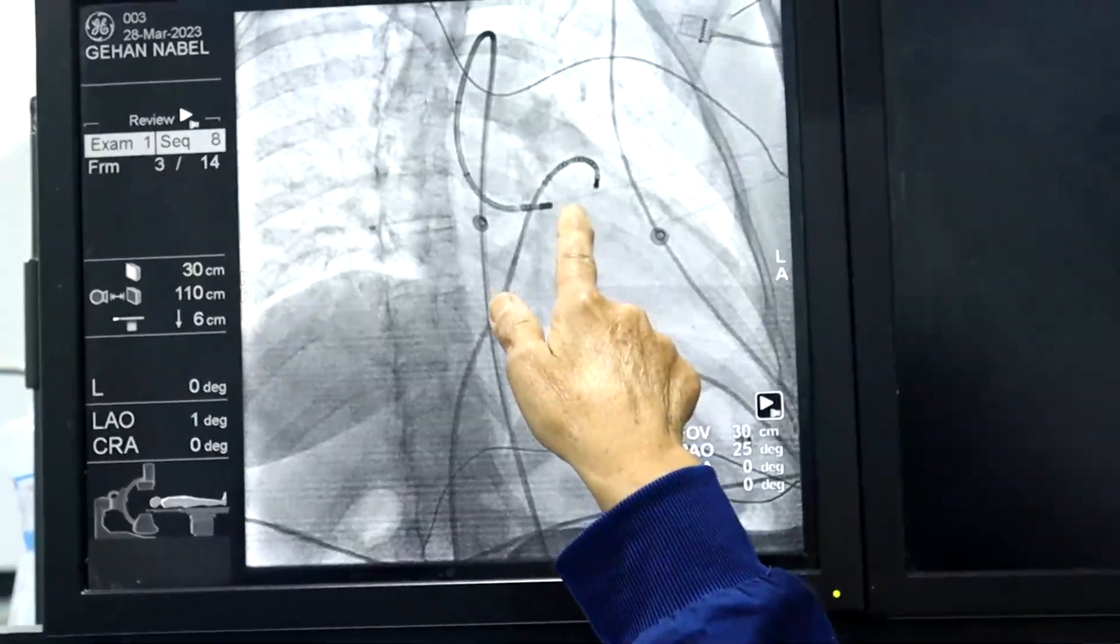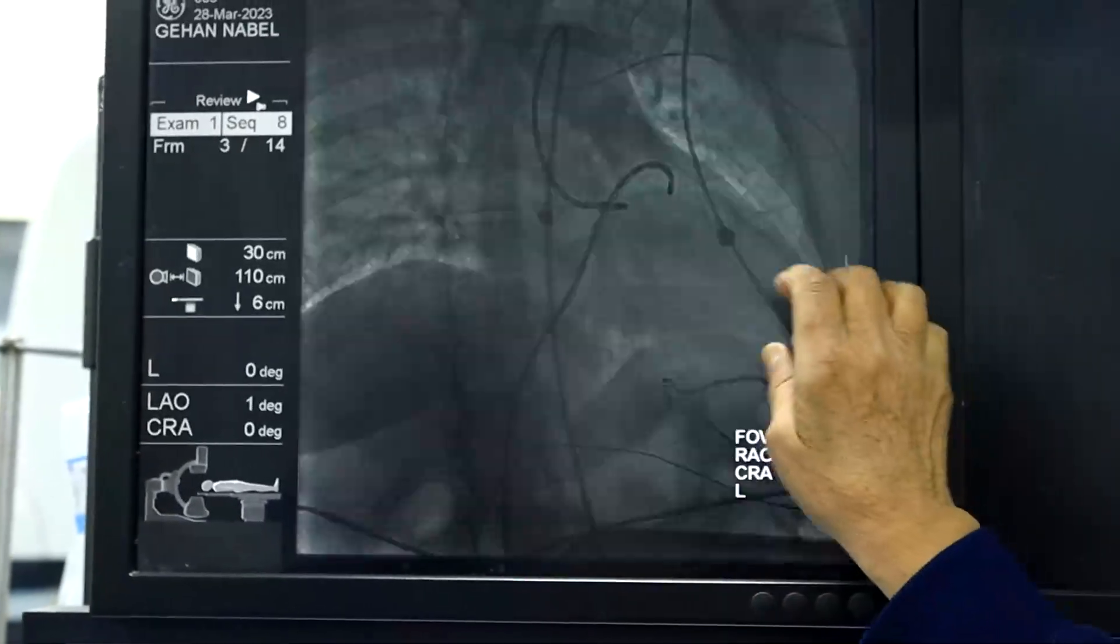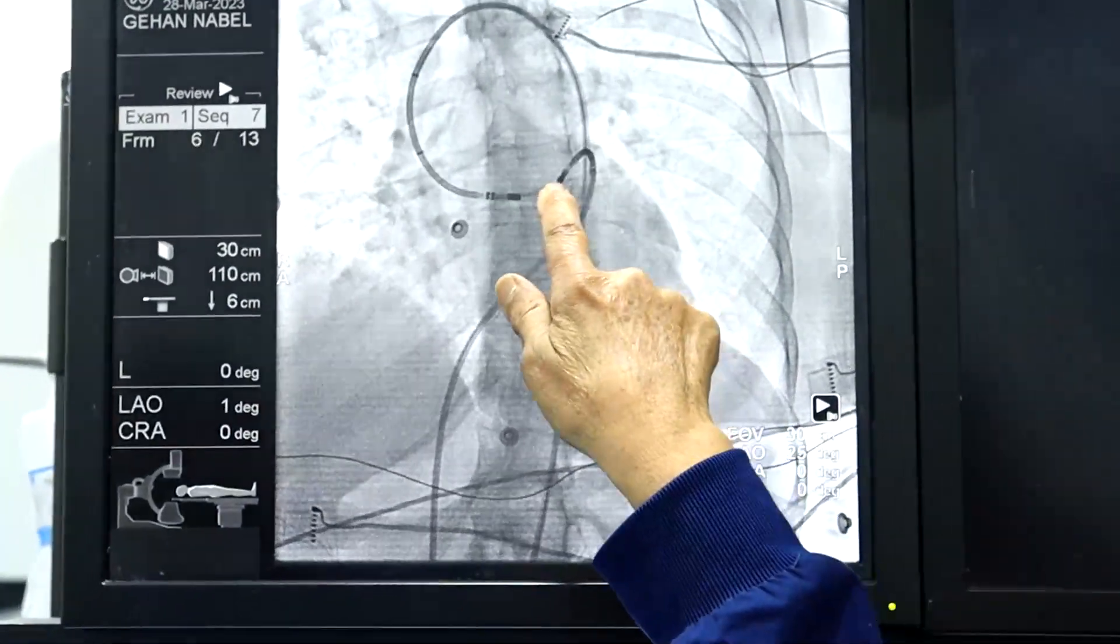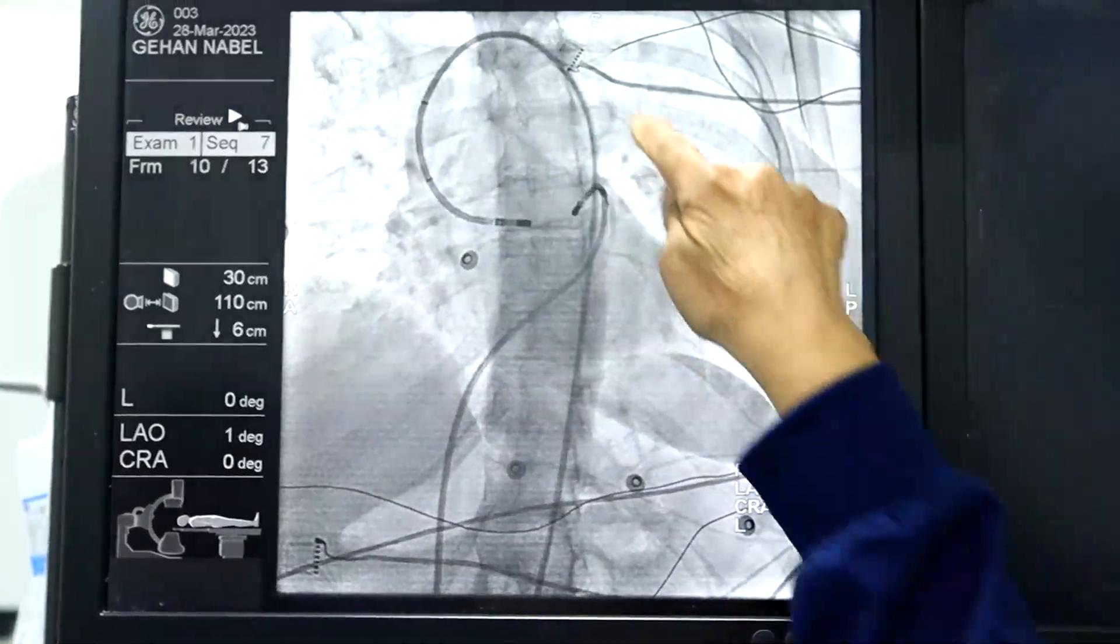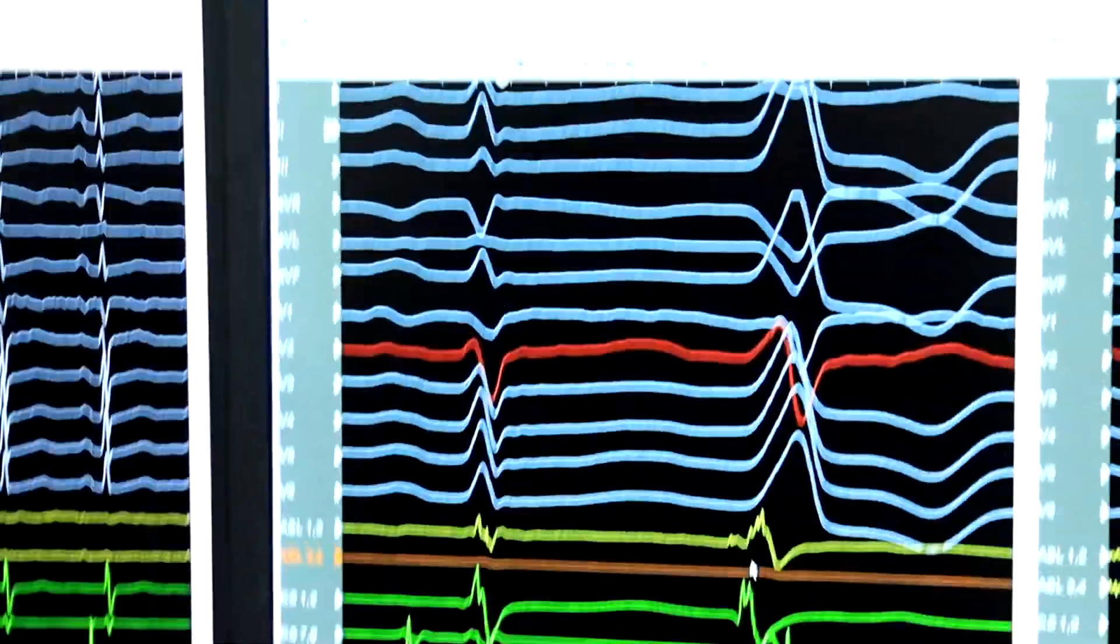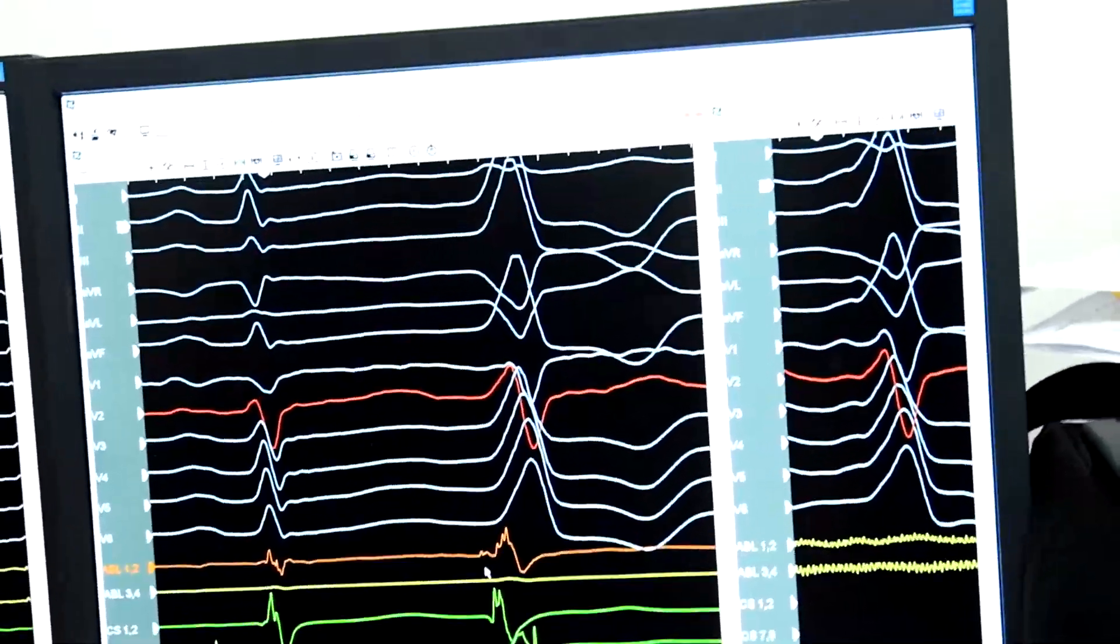Here this is the carto catheter. We use the 3D mapping for better localization and getting good signal. You can see this is very, very short. This is the retrograde approach into the junction between the left coronary cusp and the right coronary cusp.